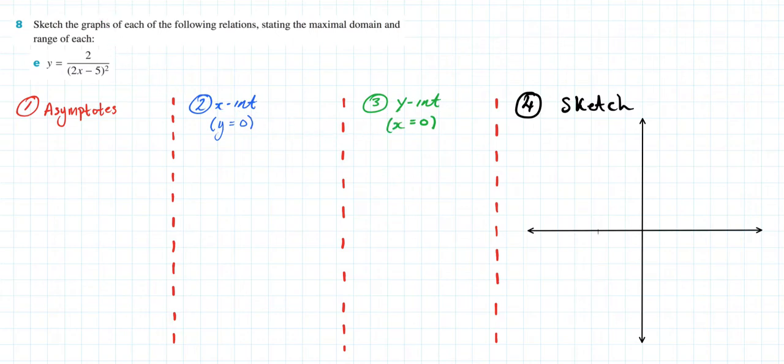So we're doing exercise 5b, and in this video I will be answering question 8e, which reads: sketch the graphs of each of the following relations, stating the maximal domain and the range of each. So here we have y equals 2 over 2x minus 5 squared. Hopefully you immediately recognize that this is going to be a truncus.